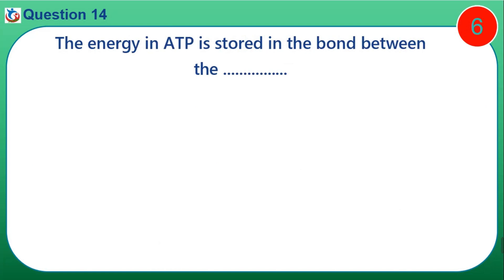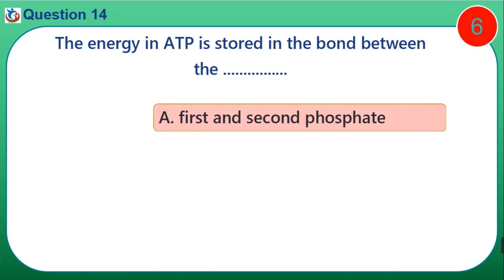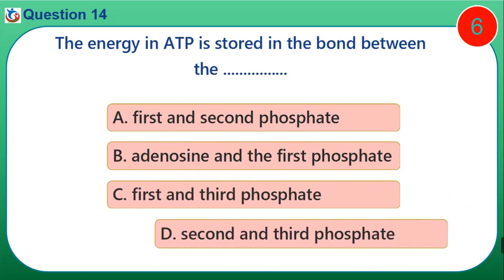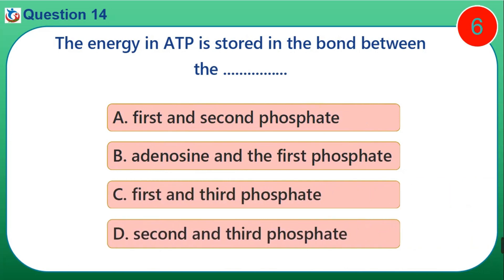Question 14. The energy in ATP is stored in the bond between the dash. A. First and second phosphate. B. Adenosine and the first phosphate. C. First and third phosphate. D. Second and third phosphate.